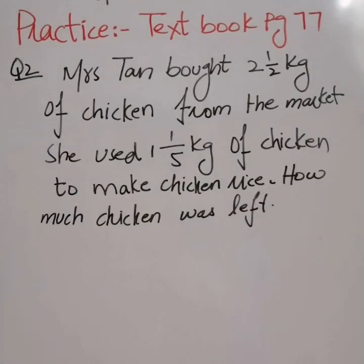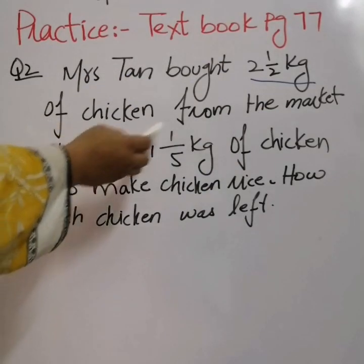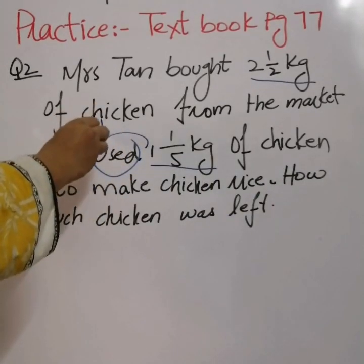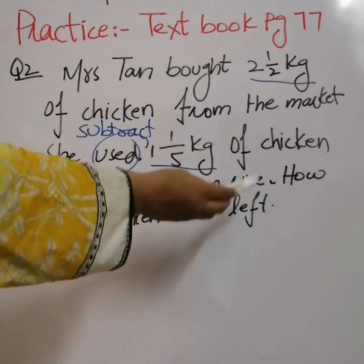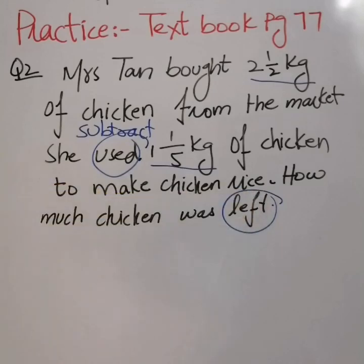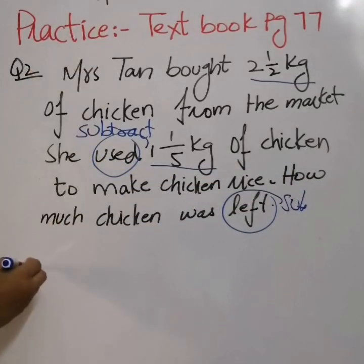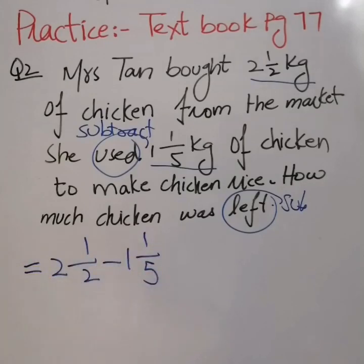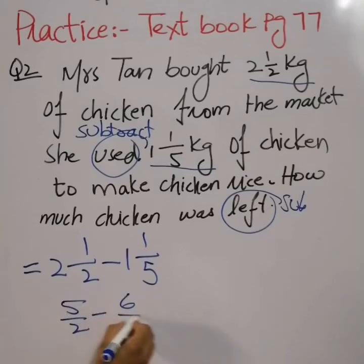We have question number 2. Mrs. Tan bought 2 whole 1 over 2 kilograms of chicken from the market. She used 1 whole 1 over 5 kilograms of chicken to make chicken rice. How much chicken was left? When the word 'left' comes, we have to subtract the numbers. Total chicken: 2 whole 1 over 2. Used: 1 whole 1 over 5.